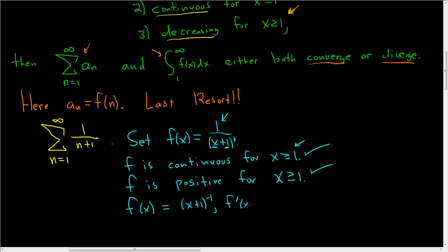Now we can take the derivative. So f prime of x, you bring the negative 1 down, so you get negative (x plus 1) to the negative 2 times the derivative of the inside, which is just 1. So this is negative 1 over (x plus 1) squared. And negative 1, well that's negative. This is always positive when x is bigger than or equal to 1, so this is less than 0. So f is decreasing for x greater than or equal to 1.